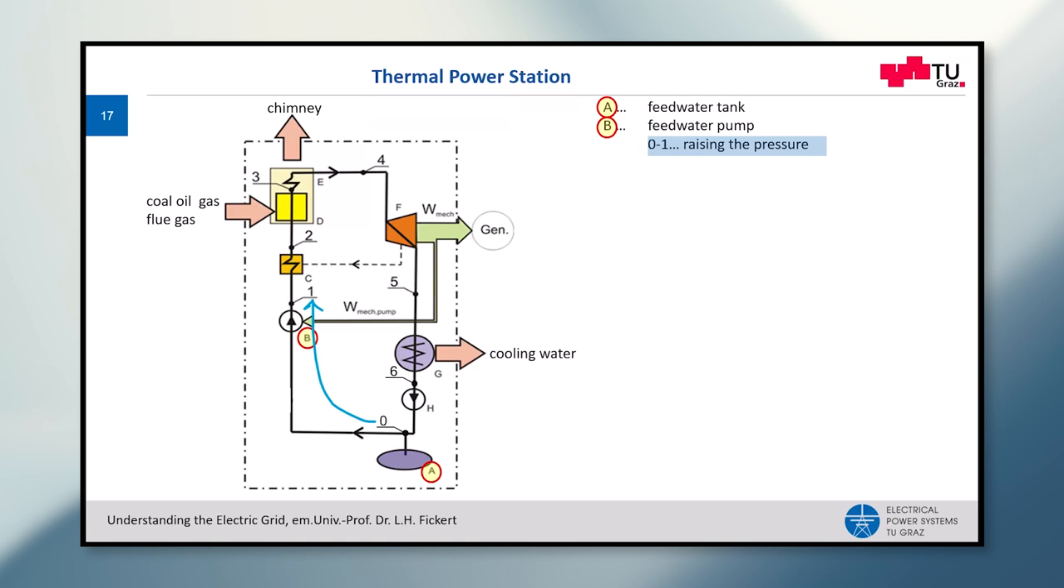Here the pressure is raised, and the next step of this process is the high pressure preheater. This is done to increase the efficiency by taking out some of the heat from the middle of the turbine and bringing it back to heat up the water in a first stage.